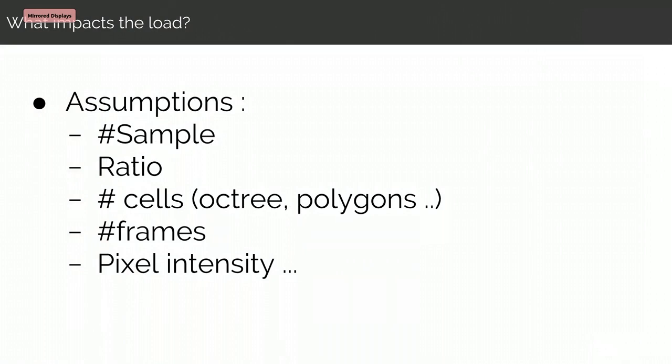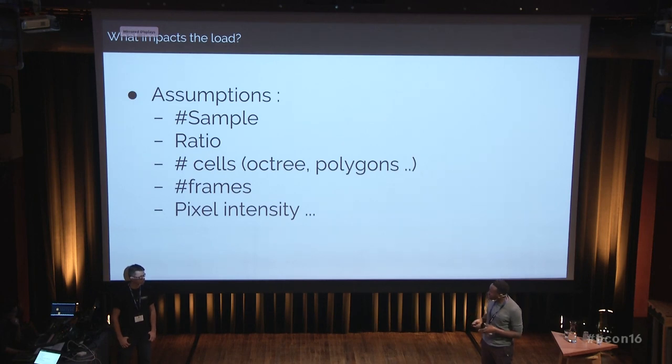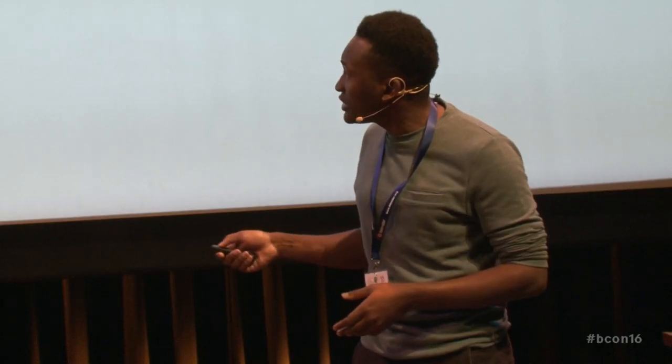For the first question, we made several assumptions about what can impact the final runtime. We considered that the number of samples probably impacts the runtime, as does the render ratio, the number of cells — by cell I mean octree polygons or whatever you use to represent and compose the image — and the number of frames. There is also the concept of pixel intensity, mentioned in several scientific papers, which may be a parameter that impacts processing runtime.